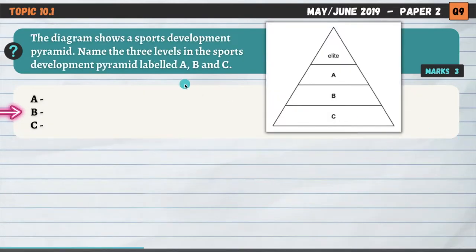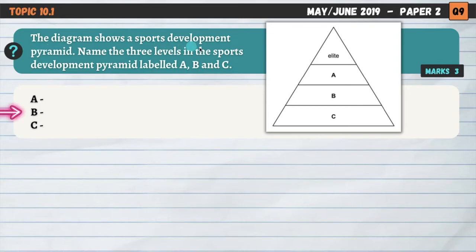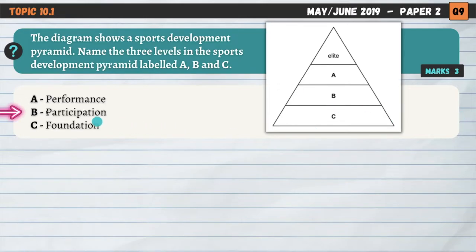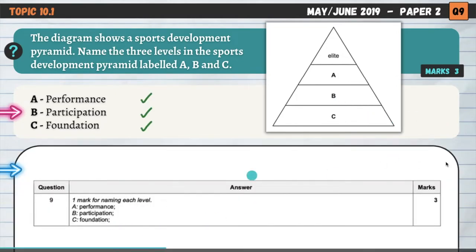Topic 10.1 on the sports development pyramid: the diagram shows a sports development pyramid — name the three levels labeled A, B and C for three marks. The command word is 'name,' so no explanation is required. A is the performance level. At the top is elite, then performance, then participation for B, and foundation for C. A really simple mark scheme.